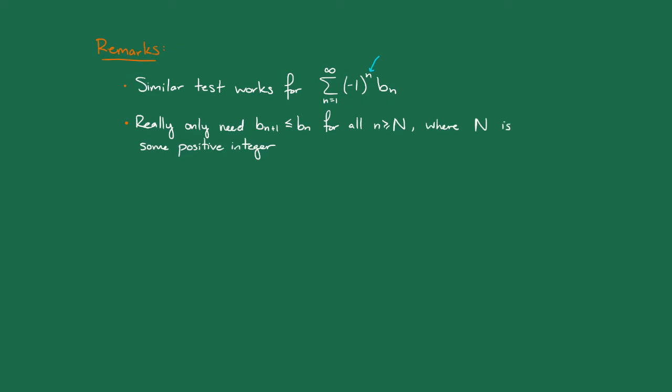This is because if the bn's are eventually decreasing, we can rip off the finitely many terms at the beginning, before the bn's are decreasing, and get a series that converges by the alternating series test,